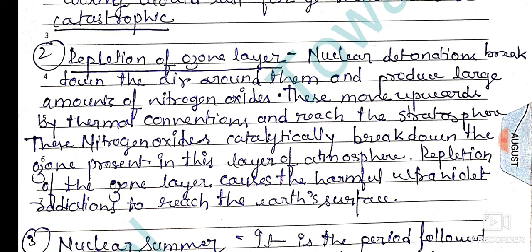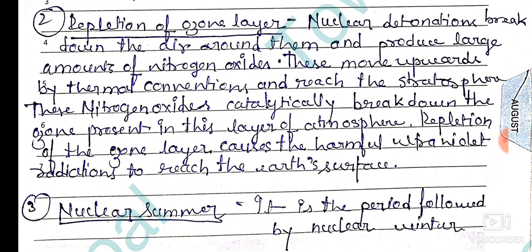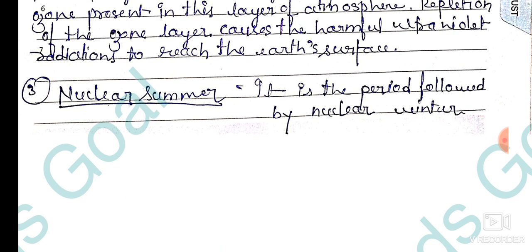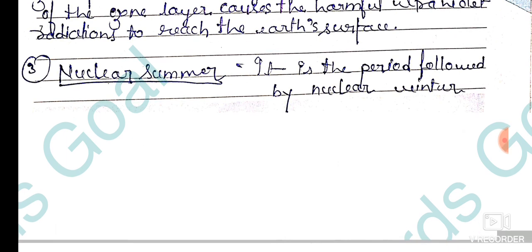Next is depletion of the ozone layer. Nuclear detonations — matlab jo nuclear explosion hota hai — break down the air around them and produce large amounts of nitrogen oxide. These move upwards by thermal convection and reach the stratosphere — stratosphere is the layer jahan pe ozone layer payi jaati hai. These nitrogen oxides catalytically break down the ozone present in this layer. Depletion of the ozone layer causes harmful ultraviolet radiation to reach the earth's surface, causing skin cancer jab UV radiation aa jaayegi.